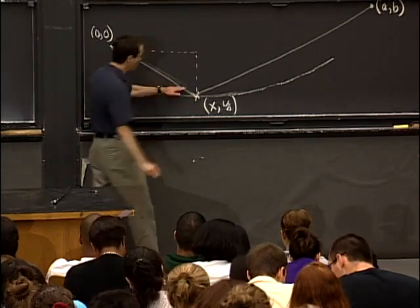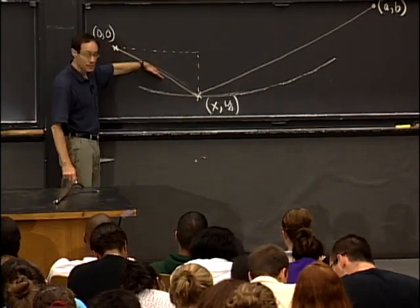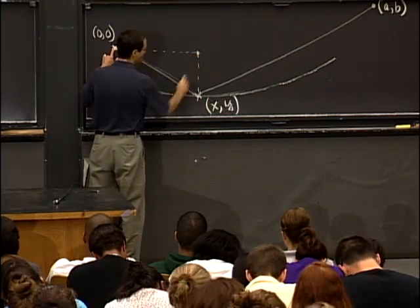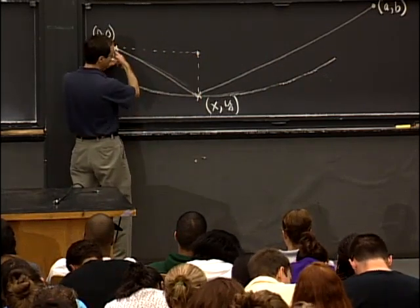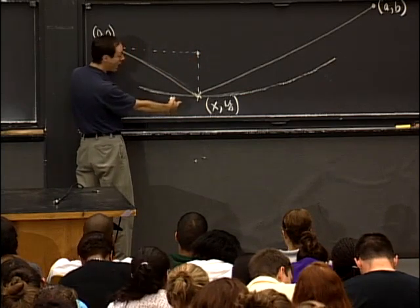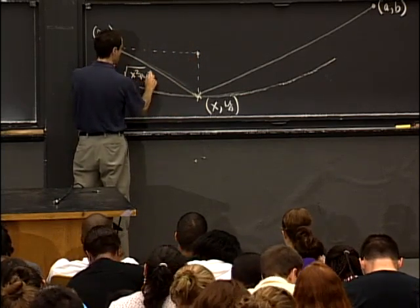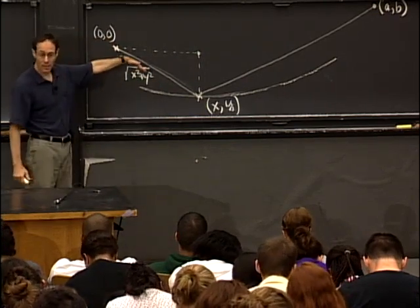And I'm going to do that by drawing in some helping lines, namely, some right triangles to figure out what this length is, and what the other length is. So this length is pretty easy if I draw a right triangle here. Because we go over x and we go down y. So this length is the square root of x² + y². That's the Pythagorean theorem.